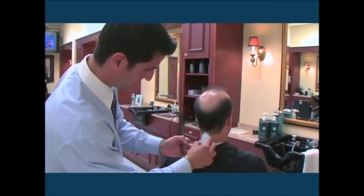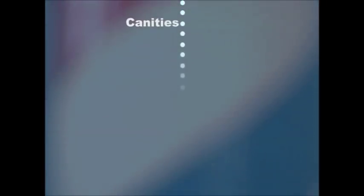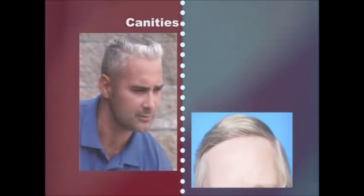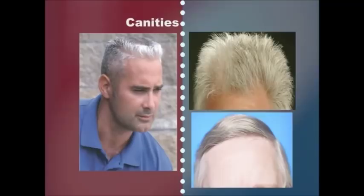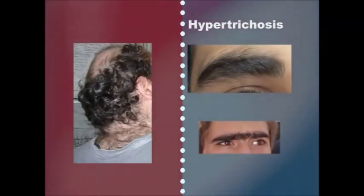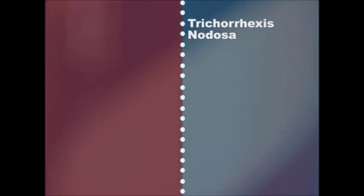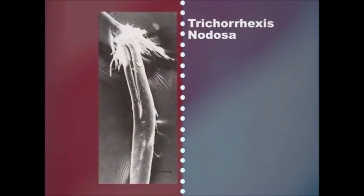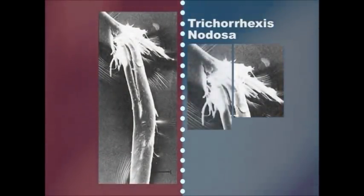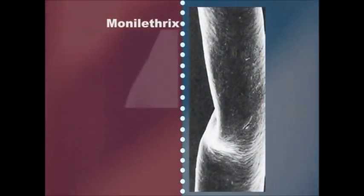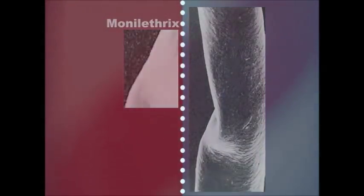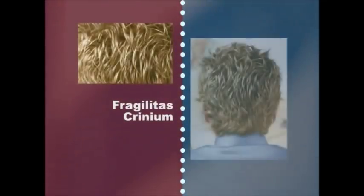Hair disorders are usually non-contagious conditions. Canities is the technical term for gray hair, which is due mainly to the loss of the hair's natural melanin pigment in the cortical layer. Hypertrichosis is a condition of abnormal hair growth in unexpected areas. Trichorrhexis nodosa is the technical term for knotted hair, characterized by brittleness and nodular swellings along the hair shaft. Monilethrix is the technical term for beaded hair, which breaks easily between the nodes. Fragilitas crinium is the technical term for brittle hair.